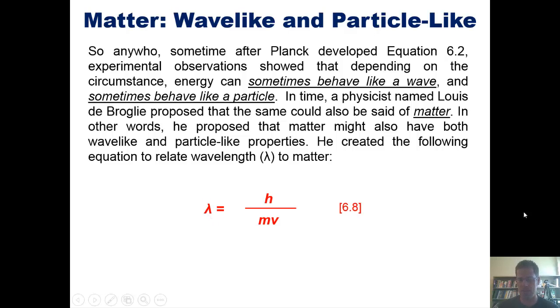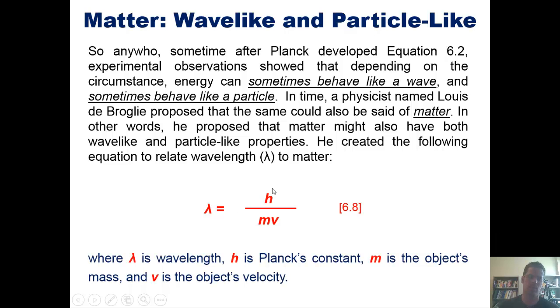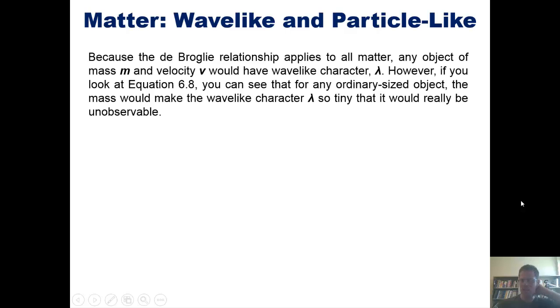Wavelength is, of course, the symbol lambda. This h, which is actually supposed to be h with a hat on it and I couldn't find that symbol when setting up my slides, is Planck's constant that we mentioned before. m is the object's mass and v is the object's velocity. This is equation 6.8 from our text. So because the de Broglie relationship, this equation that I just barely showed you, applies to all matter, any object of mass m and velocity v would actually have wave-like character.